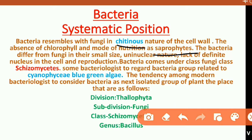Bacteria are also different from fungi in some ways. These are uninuclear in nature because the entire organism develops from a single cell. There is also a lack of a definite nucleus in the cell — a definite nucleus is absent in bacteria.